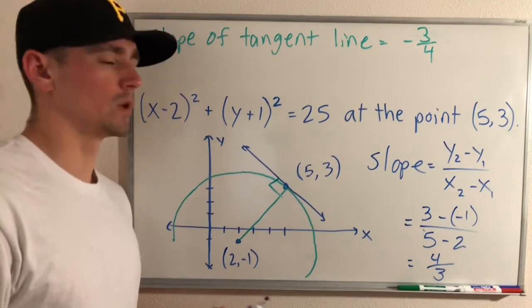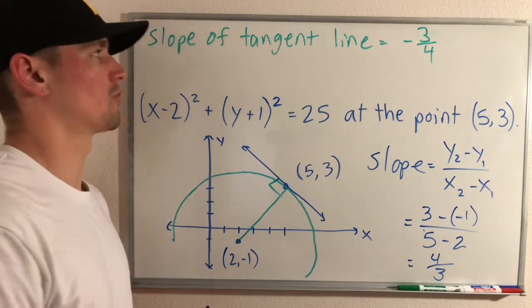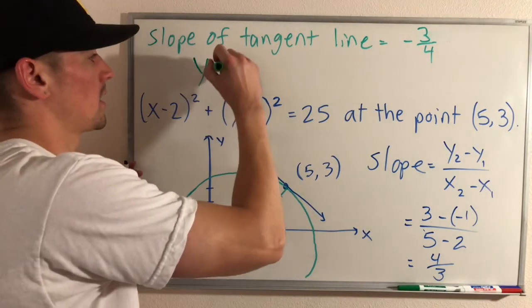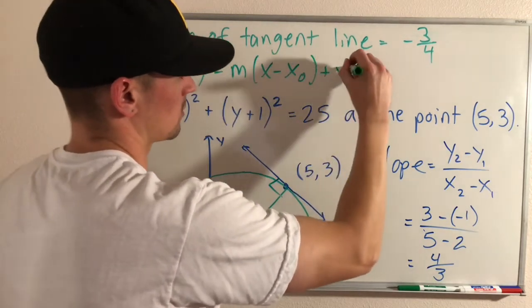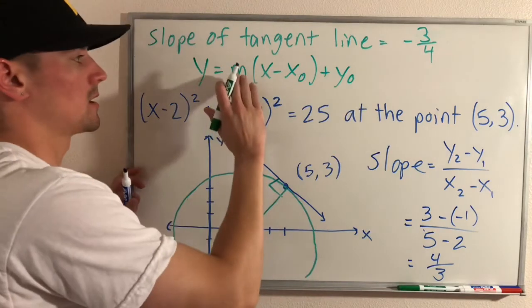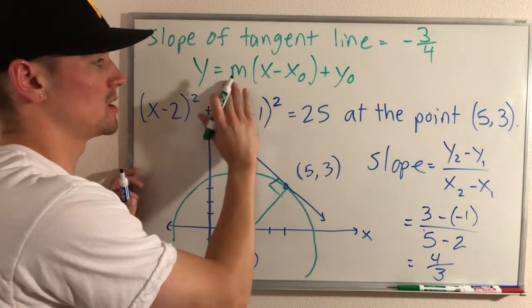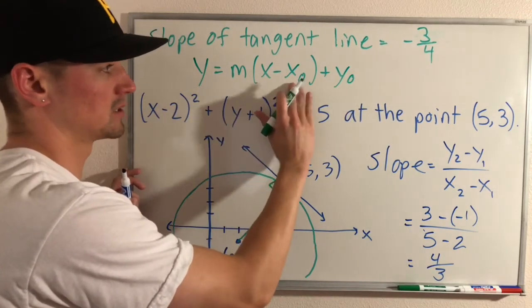So to get the full equation of this tangent line we can use the point slope form which would be y = m(x - x₀) + y₀.